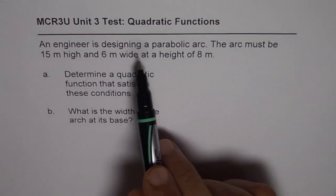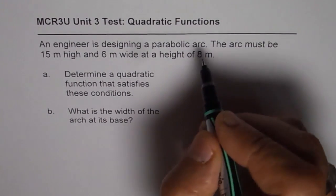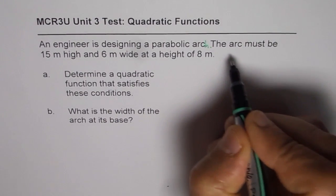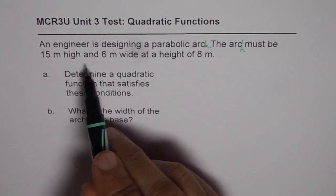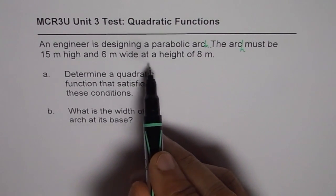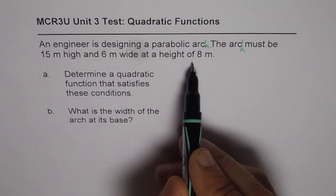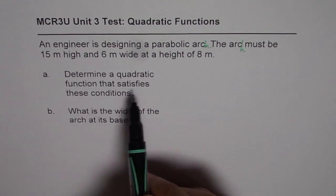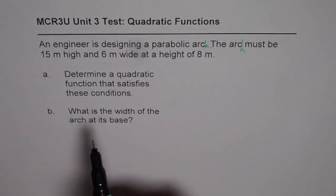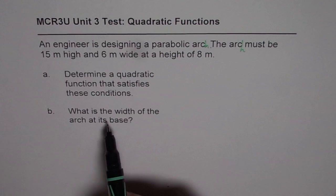An engineer is designing a parabolic arc. The arc must be 15 meters high and 6 meters wide at a height of 8 meters. Part a: Determine a quadratic function that satisfies these conditions. Part b: What is the width of the arc at its base?